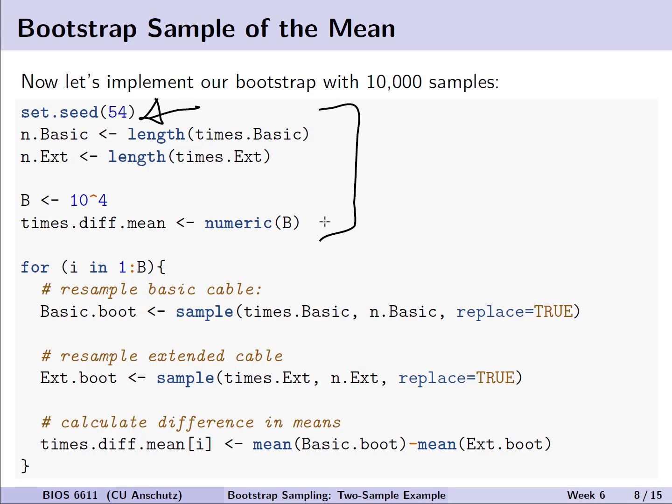We'll then calculate some of these values that we need for the resampling, such as the number of observations for both basic and extended cable, the number of desired bootstraps B, as well as initializing times.diff.mean as an object to store our results in.